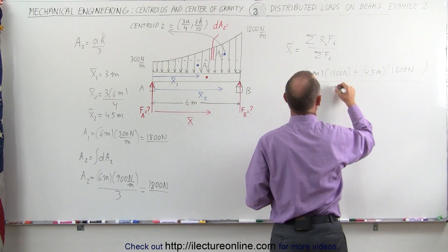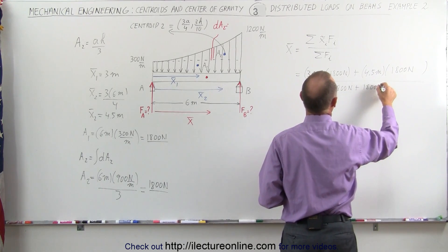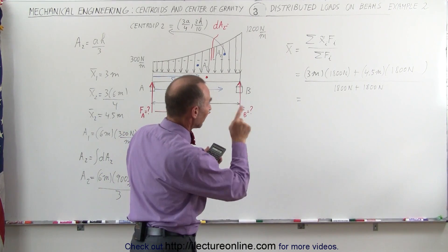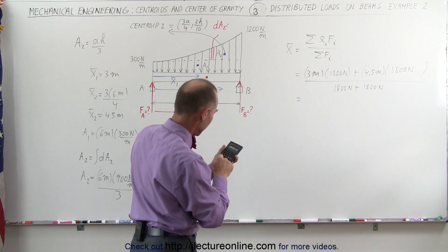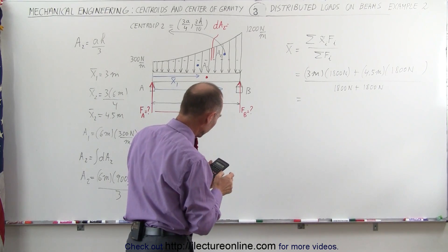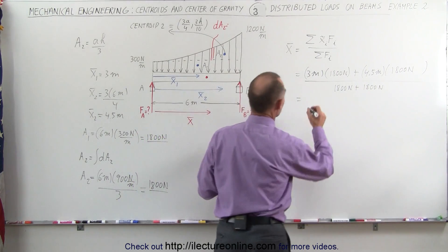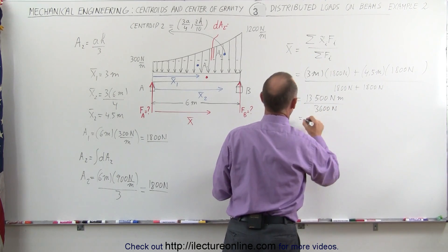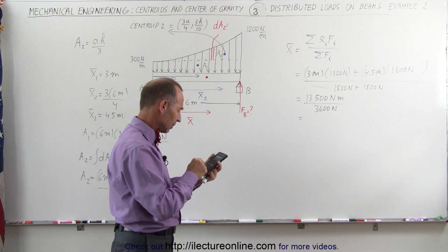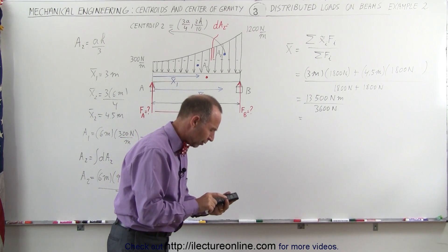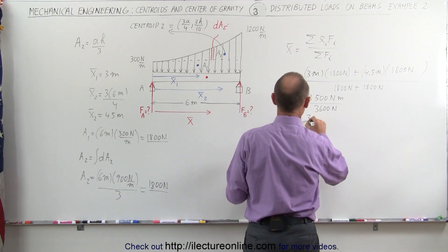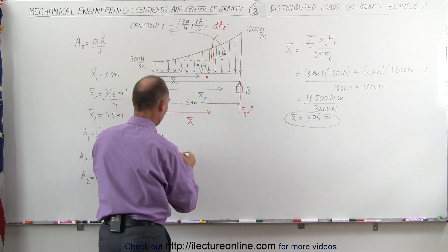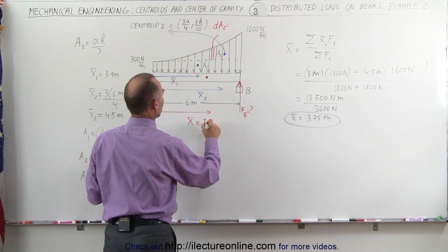Dividing by the total force — 1800 plus 1800 equals 3600 newtons — we get: 1800 times 3 plus 1800 times 4.5 equals 13,500 newton-meters. 13,500 divided by 3600 gives us 3.75 meters, which is the x-coordinate of the centroid of the distributed load.